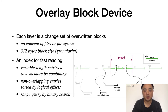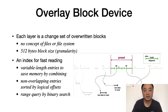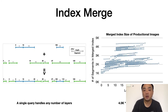Each layer in DADI is a change set of overwritten data blocks. There is no concept of files or file system, and we have an index for fast reading. The index has a variable length of entries in order to save memory by combining adjacent entries. We believe memory footprint is important because containers are often used for high-density deployment. The index is an array of non-overlapping entries sorted by their logical offsets. When reading the image, we perform range queries directly over the index instead of block-by-block queries. The indexes of multiple layers can be merged when loaded so that a single query can handle any number of layers, and the performance doesn't degrade as the number of layers increases. This is a key advantage over overlayfs.